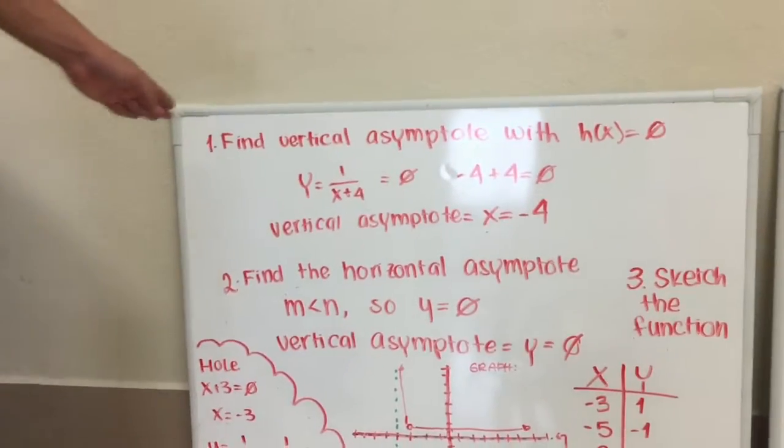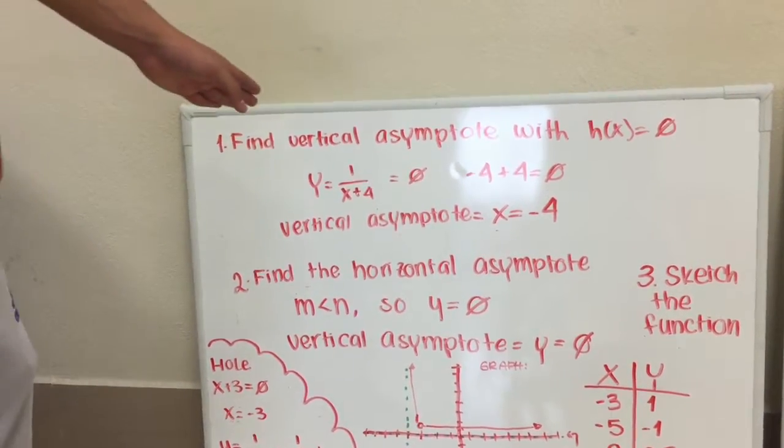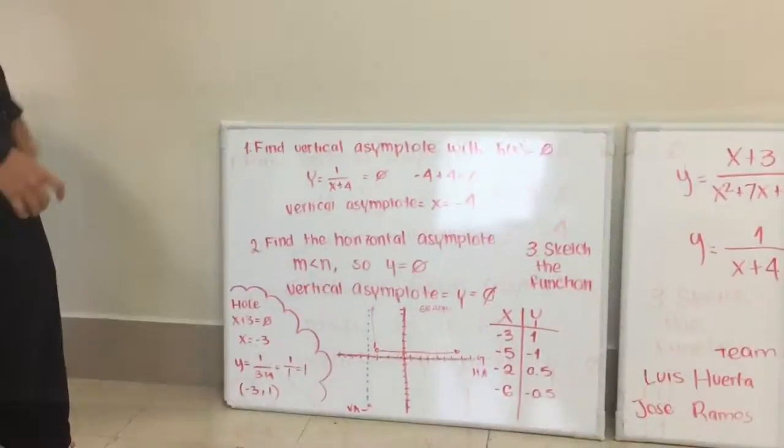And to find the horizontal asymptote, we have three options. But in this case, since n is greater than m, y equals 0.